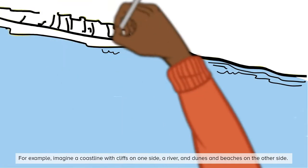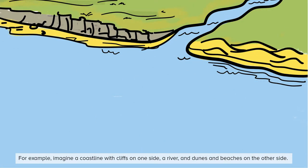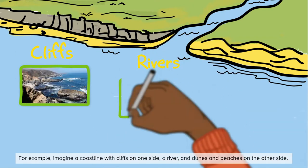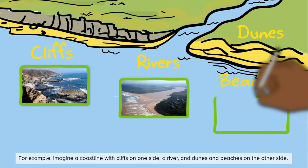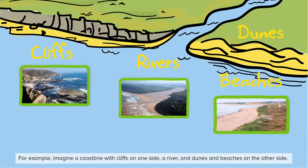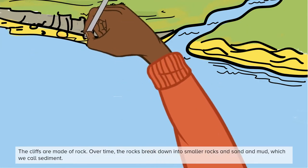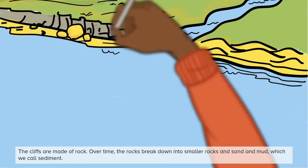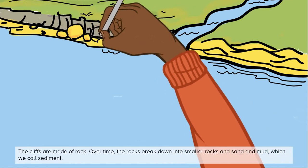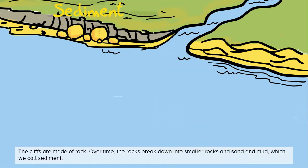For example, imagine a coastline with cliffs on one side, a river and dunes and beaches on the other side. The cliffs are made of rock. Over time, the rocks break down into smaller rocks and sand and mud, which we call sediment.